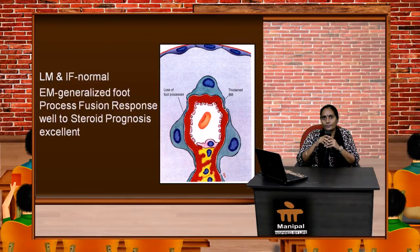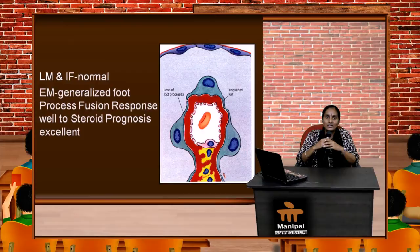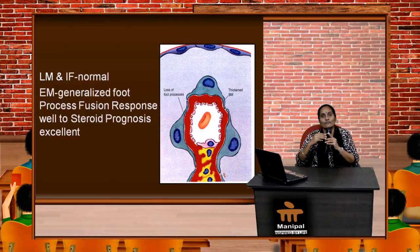In minimal change disease, light microscopy (LM) and immunofluorescence (IF) are essentially normal. Under electron microscopy (EM), you are going to see a generalized foot process fusion, which we call loss of foot processes. This disease responds very well to steroids and the prognosis is excellent.